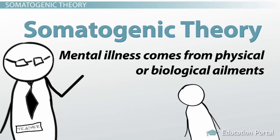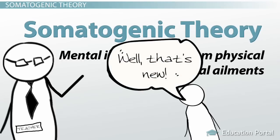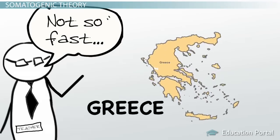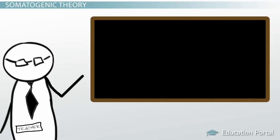Now, you might think that the somatogenic theory of abnormal psychology is pretty new, but it actually goes back to ancient Greece. Let's take a look at a few of the most important historical moments in the biological view of mental illness.